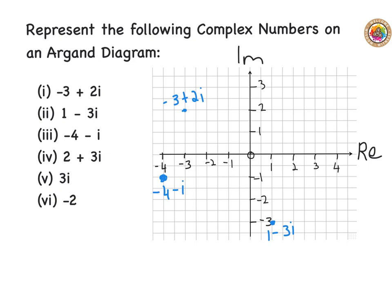Now onto a couple of more difficult ones where we have just one part of the complex number. The complex number is just along the imaginary axis. When I see just three i, I know that's the same as zero plus three i — so I go to zero on the real axis and straight up to three on the imaginary axis. I plot that point and label it three i.